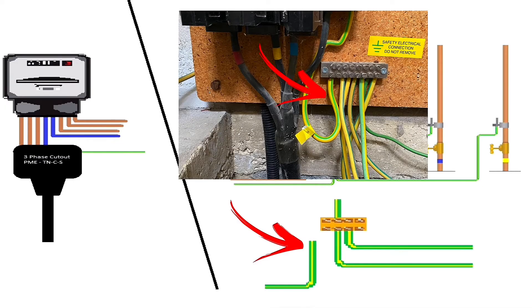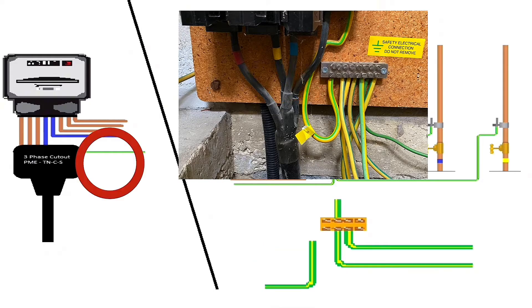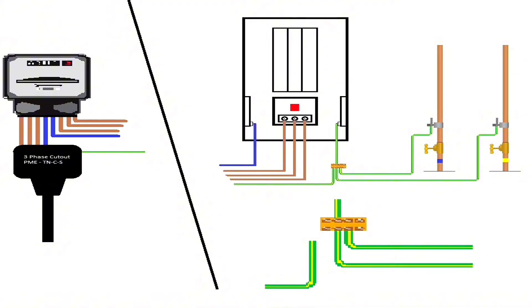You disconnect the 16mm, or whatever size it is, earthing conductor, as I've shown there, which is the incoming one from the main supply. With that disconnected, remembering the board needs to be isolated before disconnecting it, we can now test.